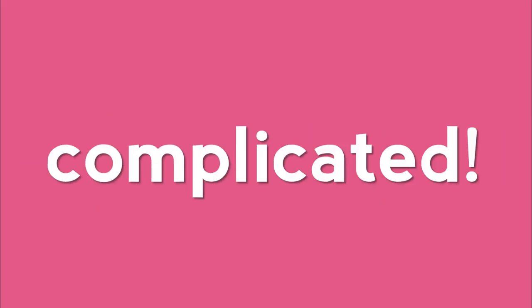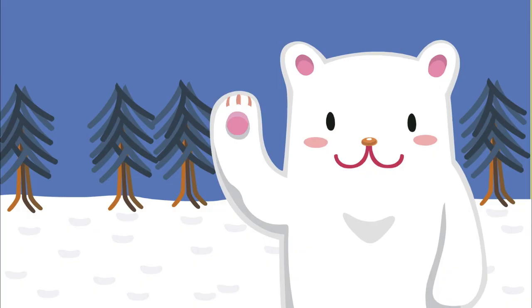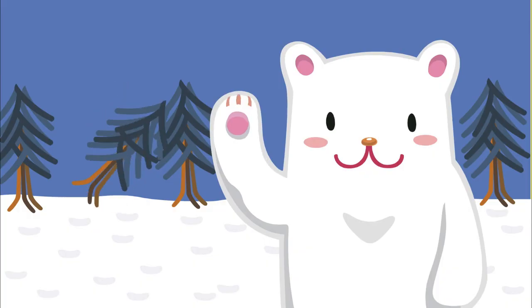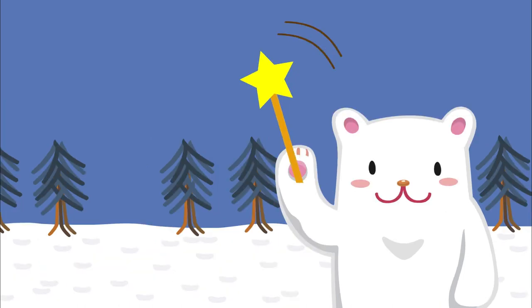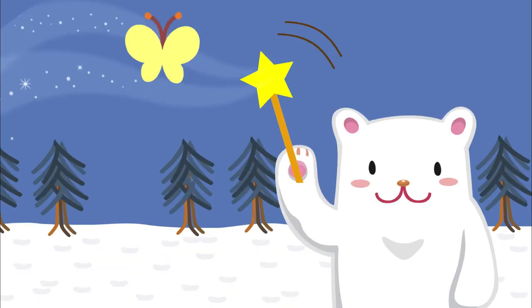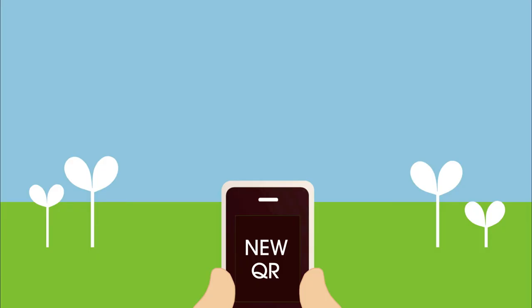Now you might think the process of making it is complicated, right? Creating an augmented reality experience can be difficult, especially for people who don't know much about coding. And this is where we come in. Daiquiri transforms everyday objects into amazing augmented reality experiences. It does this by using QR codes that let you create rich media experiences that you can interact with in the real world.